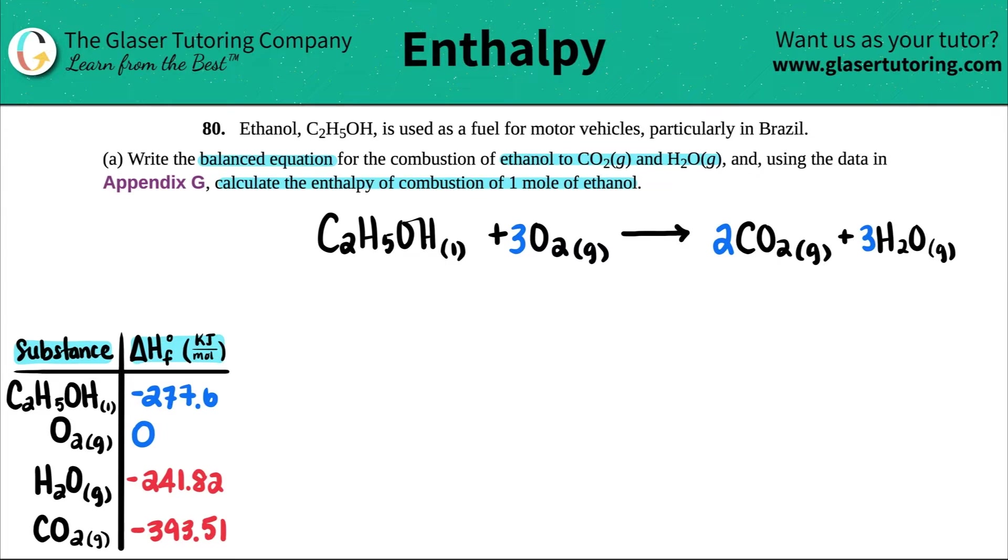So I went to appendix G for you guys, and I wrote down all the delta H values that we're going to use in our little equation here. So I'm just going to rewrite what they are below the compound. So I have negative 277.6 for the ethanol. This is a zero. And then we have the CO2, which is a negative 393.51. And then we have negative 241.82.